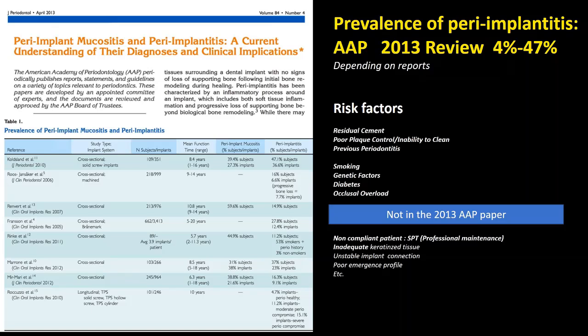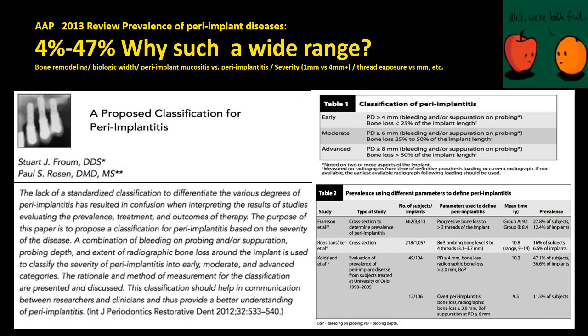Previous history of periodontitis was also a risk factor, along with smoking, genetic factors, diabetes, and occlusal overload. Additionally, professional maintenance has increasingly clear evidence for reducing the incidence of peri-implantitis. Inadequate keratinized tissue can cause bone loss, and unstable implant connections and emergence profile are also relevant factors we'll discuss.